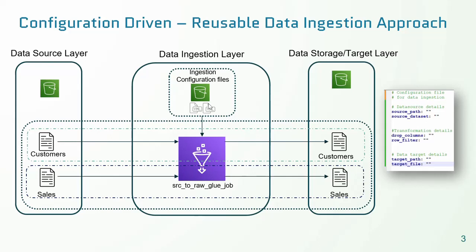The configuration file will contain a definition of where the source file resides, what its format is, and what type of transformations to be applied — for instance, columns to be dropped and what filter to apply. Finally it includes the target details: where the filtered and transformed data needs to be loaded in S3 as a Parquet format. This is a simple definition of the config file which can be evolved based on real-world requirements to include more conditions. The config file is fed as an input to the Glue ETL job.